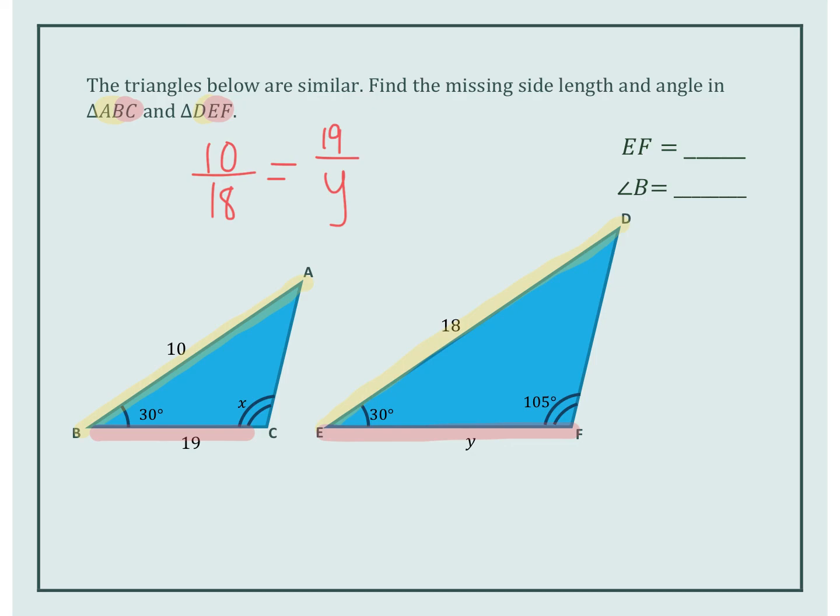Write that down. Go ahead and cross multiply and divide. If you want to practice, pause it here. We are going to cross multiply and divide. So 10 times Y is 10Y. 18 times 19 is 342. Now using that inverse operation, we're going to divide both sides by 10. We get Y equals 34.2.